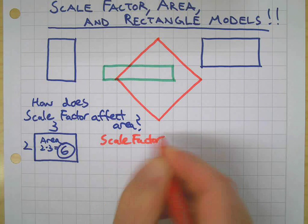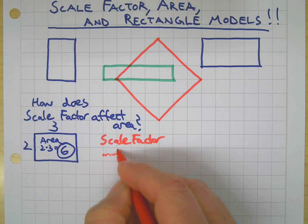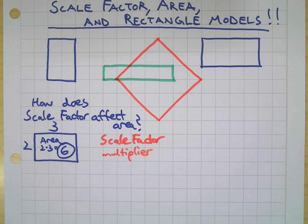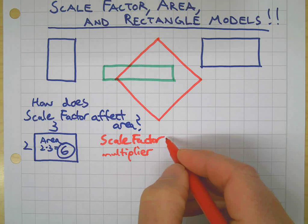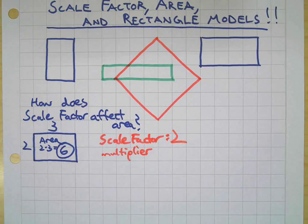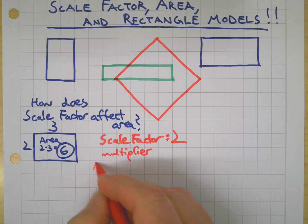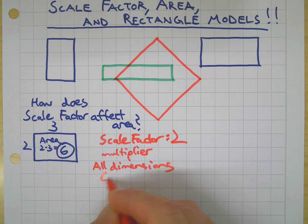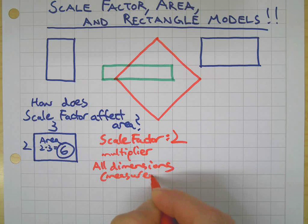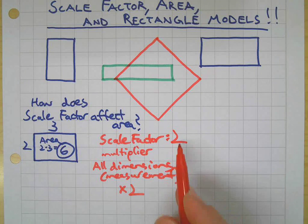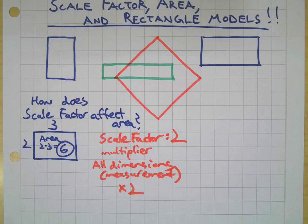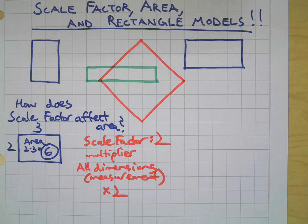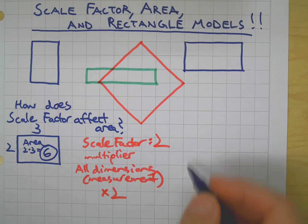Scale factor is sometimes thought of as a multiplier. What that means is, if I have a scale factor of, let's say, two, that means all dimensions — dimension is another word for measurement — all dimensions or measurements are multiplied by two, the scale factor.